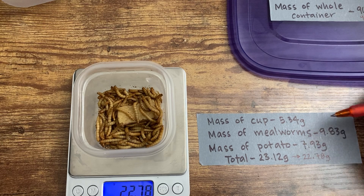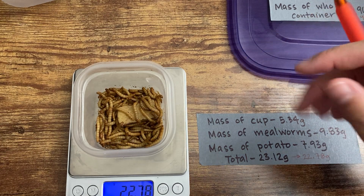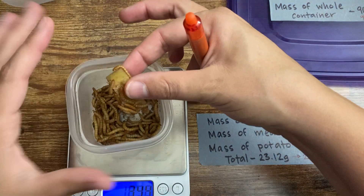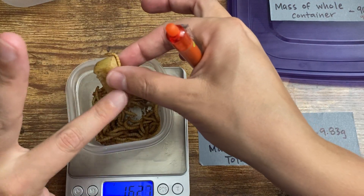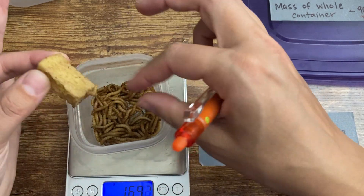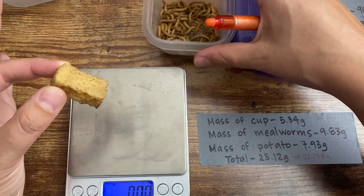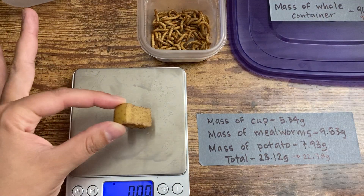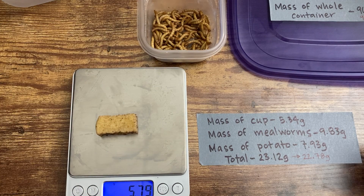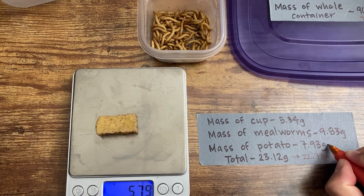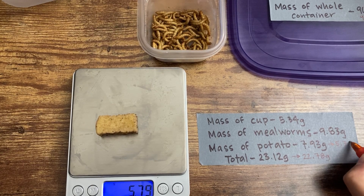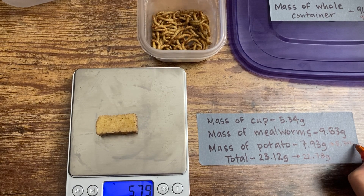We also need to know the mass of the potato. If I take the potato out and remove the mealworms from it, the mass of my potato has gone down quite a bit — it is now 5.79 grams.